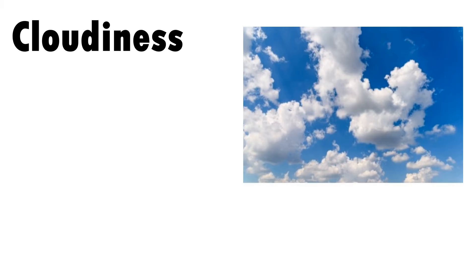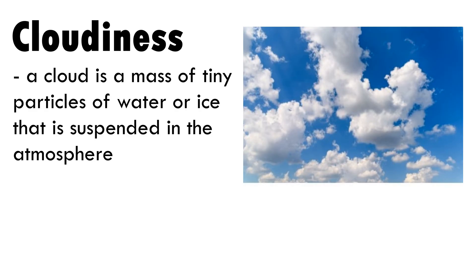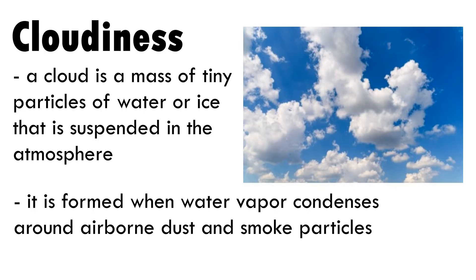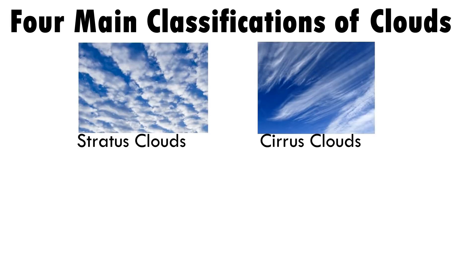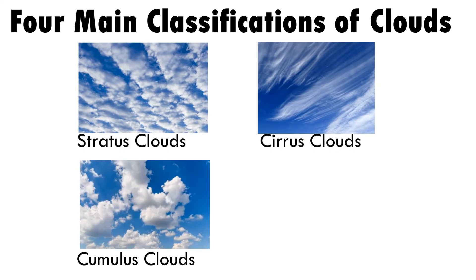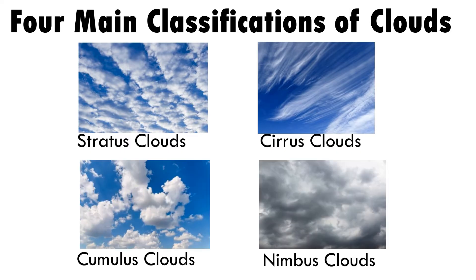Cloudiness: a cloud is a mass of tiny particles of water or ice suspended in the atmosphere. It is formed when water vapor condenses around airborne dust and smoke particles. There are four main classifications of clouds: stratus clouds, cirrus clouds, cumulus clouds, and nimbus clouds.